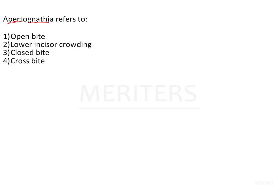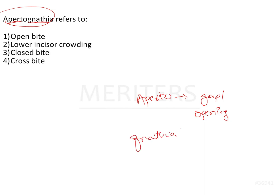Apertognathia — when you break this word down, 'Aperto' means gap or an opening, like the aperture of a camera lens, and 'gnathia' or 'gnathic' means something related to the jaws. So technically this term refers to an opening between the jaws, or a gap that is seen between the jaws.